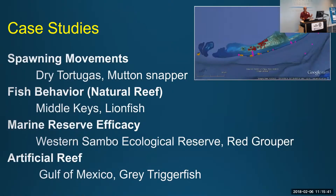I'm going to present four different case studies from four different regions in the Florida Keys. One will talk about spawning movement in the Dry Tortugas. The second will be about fish behavior using lionfish in the middle Keys — an inshore study. Then we have a marine reserve efficiency study done in the western Sambos using red grouper. And finally, I'll borrow from a colleague some information on acoustic telemetry done in the Gulf of Mexico for reef fish.